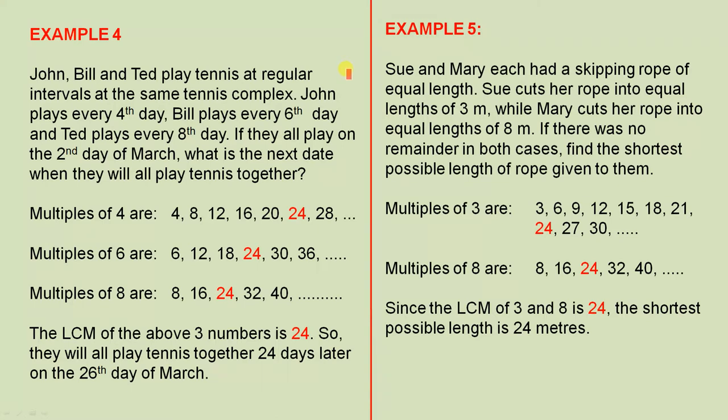John, Bill and Ted play tennis at regular intervals at the same tennis complex. John plays every 4th day. Bill plays every 6th day. And Ted plays every 8th day. If they all play on the 2nd of March, what is the next date when they will all play tennis together? Now, we're going to find the multiples of 4, 6 and 8, because they're the three numbers here that occur in the problem.